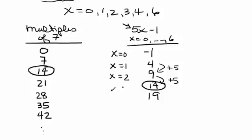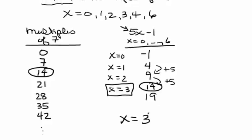So 14 would occur if we plugged 3 into 5 times x minus 1. So what we're looking for is an x that gives us a value for 5x minus 1 that's divisible by 7, and we've found it. The solution to this equation is x equals 3.